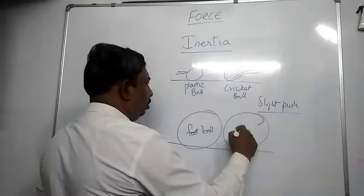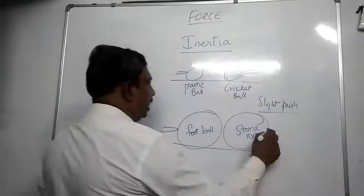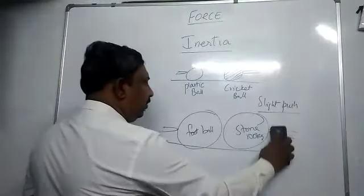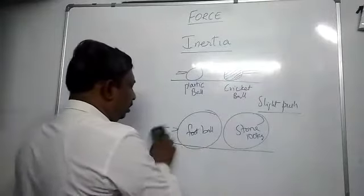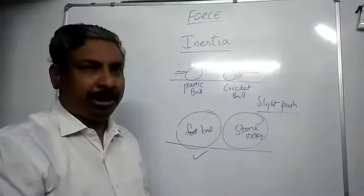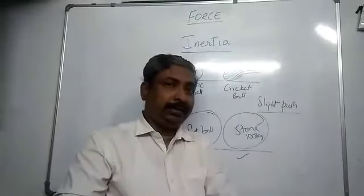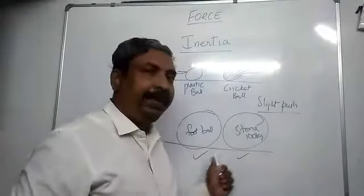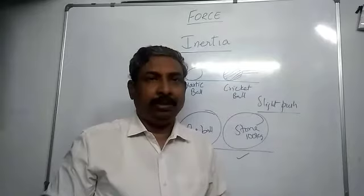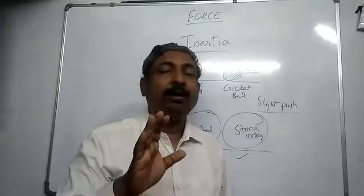Now compare a big football with a stone of about 100 kg. Try to push both the same way. The ball can move easily — it shows less opposition to change. But the stone says it doesn't want to change. Because the stone is heavier, heavier objects have more inertia. Objects which have more mass have more inertia.